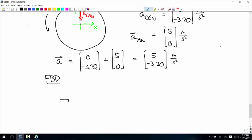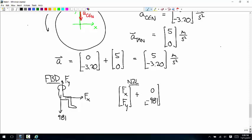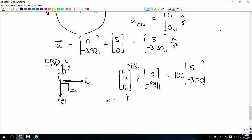A free body diagram, there's the weight of 981 and then the force with the unknown direction that's the force applied by the seat. And so Newton's second law says fx fy plus 0 negative 981 is equal to the mass times the acceleration of 5 negative 3.20. The x equation says fx is equal to 500 and the y equation says fy is equal to 661. So together this says the force on the passenger by the seat is equal to 500 661.